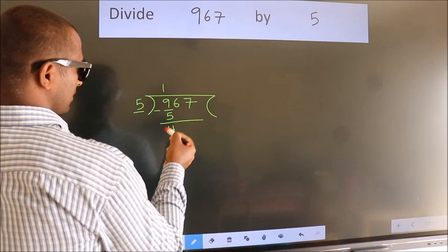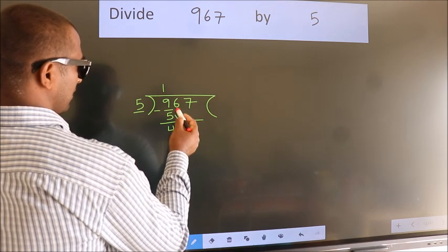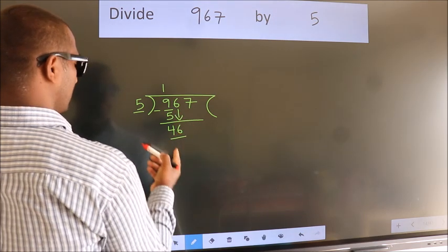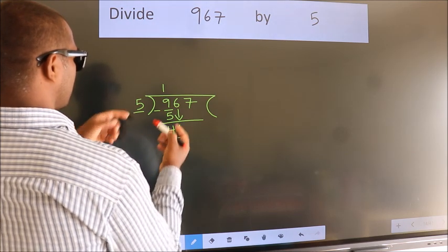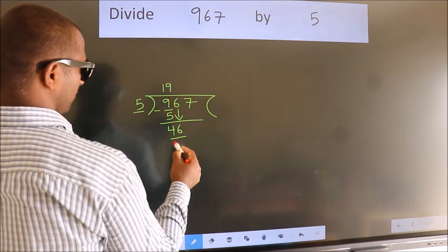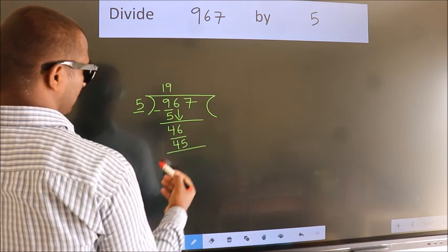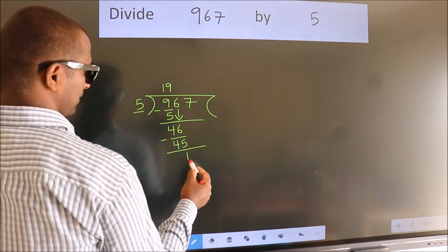After this, bring down the beside number. So, 6 down. So, 46. A number close to 46 in the 5 table is 5 nines 45. Now, we subtract. We get 1.